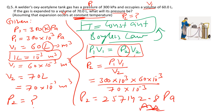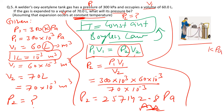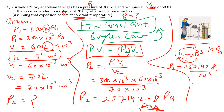This answer can also be expressed in kiloPascal. Since 1 kilo = 10³, we divide 257,142.8 by 10³ to get approximately 257.1 kPa. Similarly, for megaPascal you divide by 10⁶.